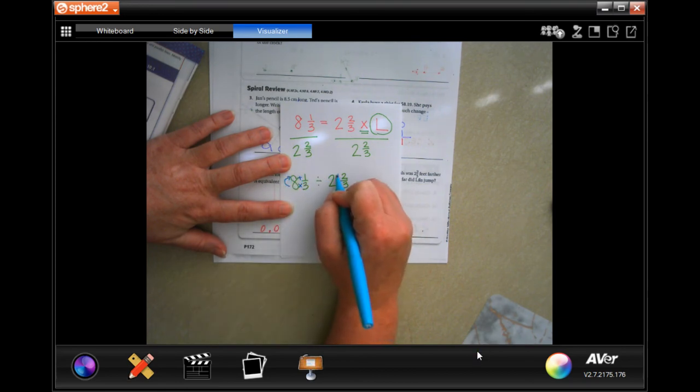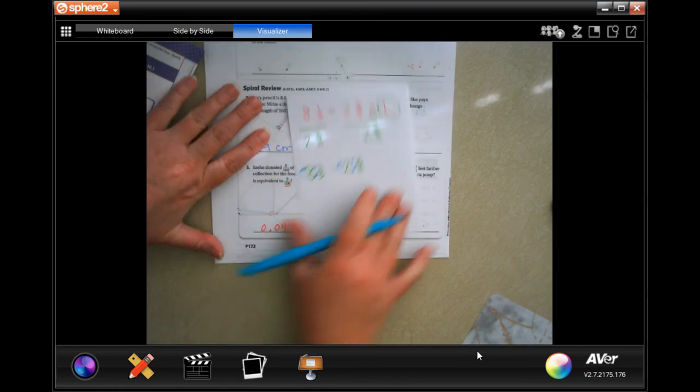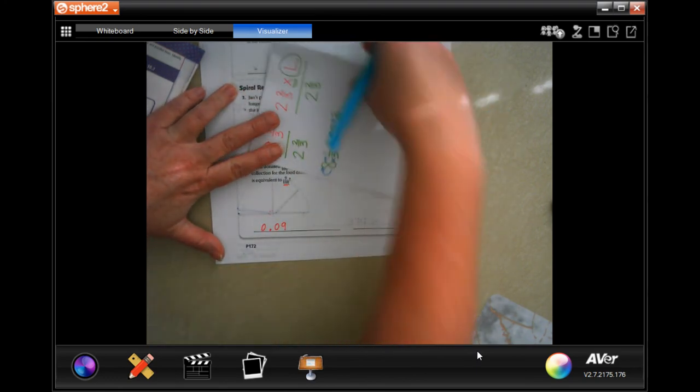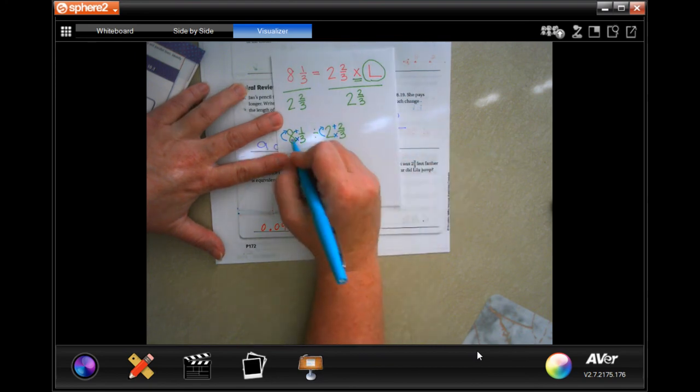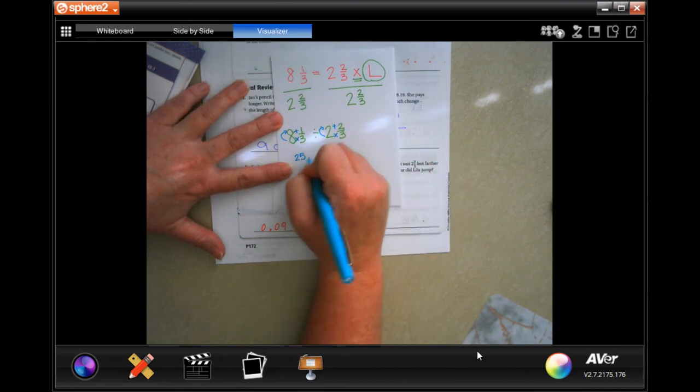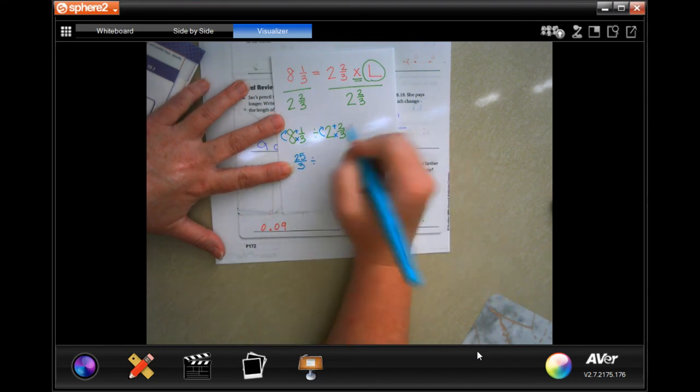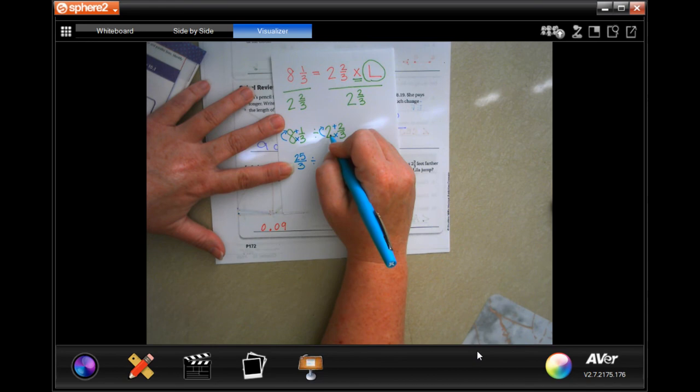Eight times three is 24 plus one more is 25, 25 over and I keep my denominator. Divided by three times two is six plus two more is eight, and I keep my denominator.